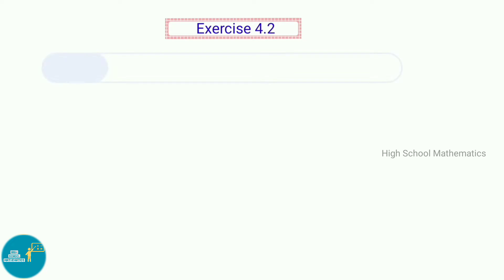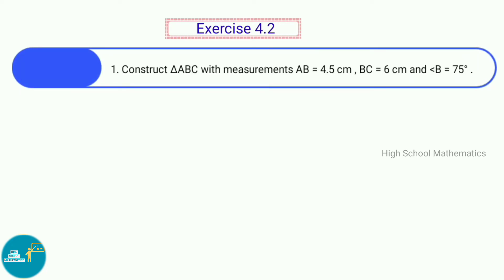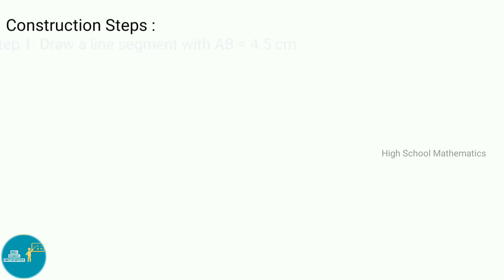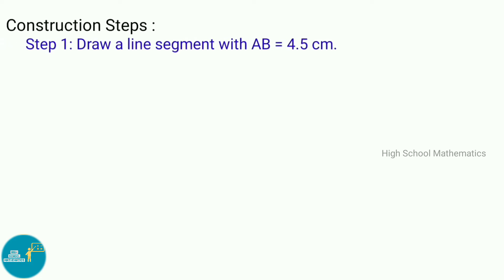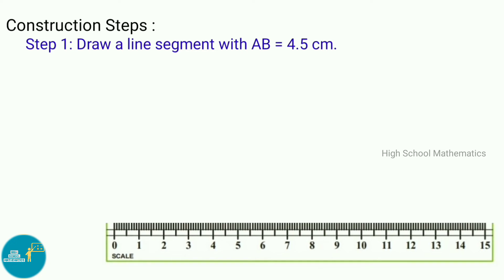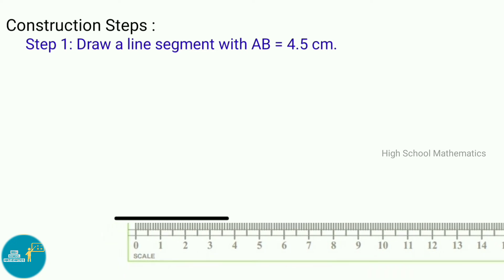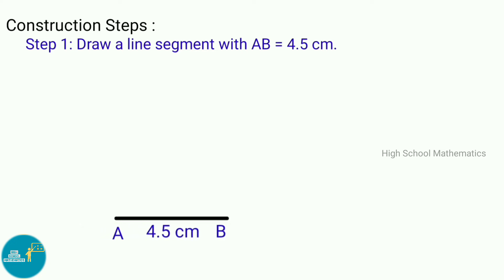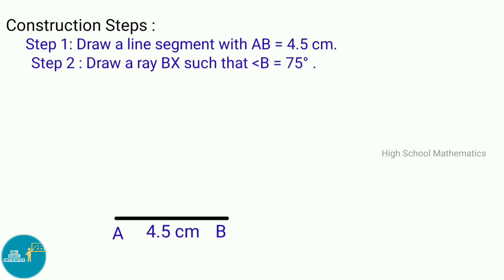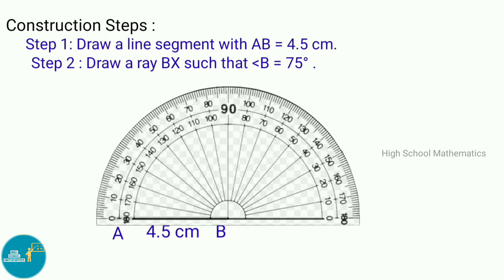Exercise 4.2, first sum: Construct triangle ABC with measurements AB equal to 4.5 centimeters, BC equal to 6 centimeters, and angle B equals 75 degrees. Construction steps — Step 1: Draw a line segment AB equal to 4.5 centimeters. Step 2: Draw a ray BX such that angle B equals 75 degrees.